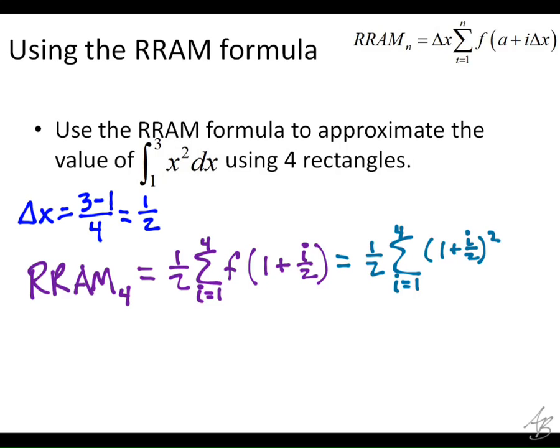Now we just plug in our i values. So this is going to be 1 half times—if we put 1 in for i, we get 3 halves in here, 3 halves squared would be 9 fourths. Put 2 in for i, we get 2 in there, 2 squared is 4. Put 3 in there, we get 5 halves squared, which is 25 fourths. And then we put 4 in there, that's our last one. We get 3 squared, which is 9.